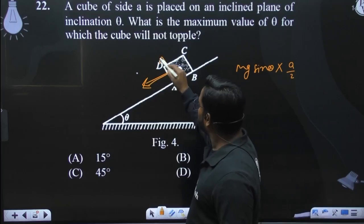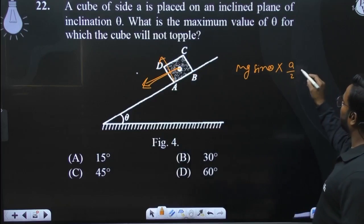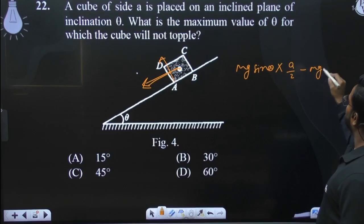Normal yahan se lagna shuru ho jayega. Maine center of mass ke about liya. Normal kitna layega? minus of mg cos theta. mg cos theta.